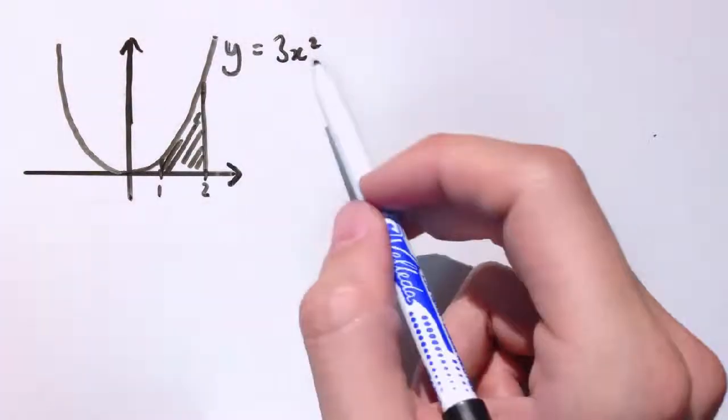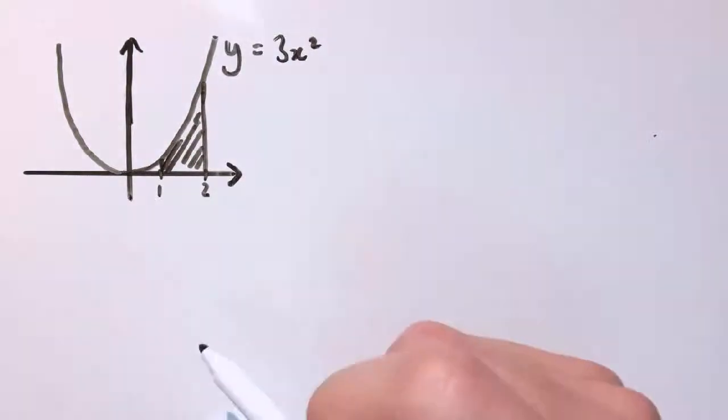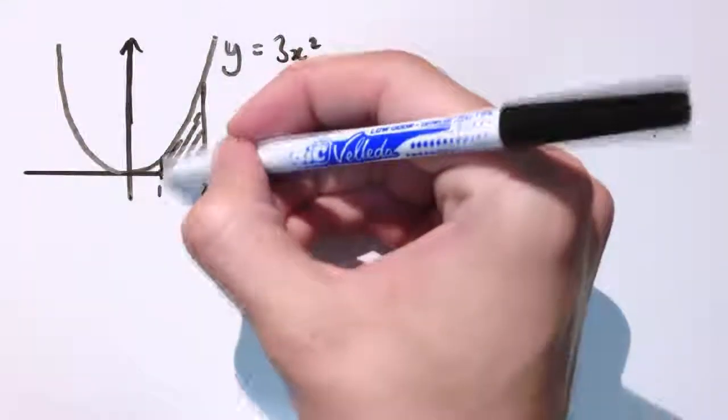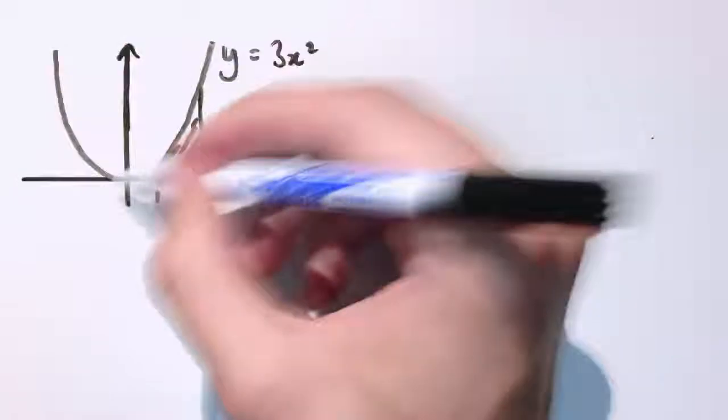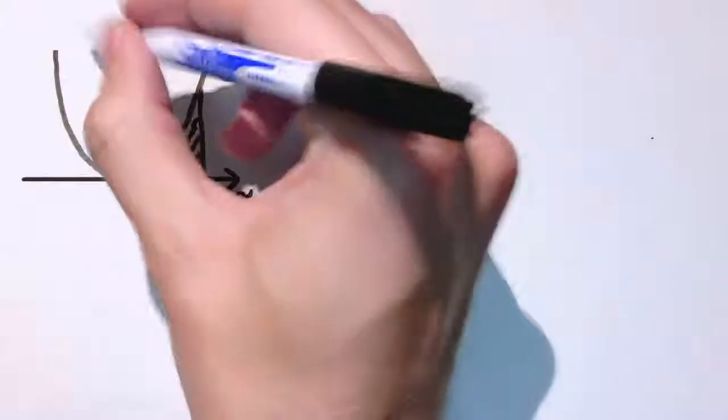So here I've got the curve y equals 3x squared and I want to find this area that's enclosed between this vertical line x equals 1, x equals 2, the curve and the x axis.